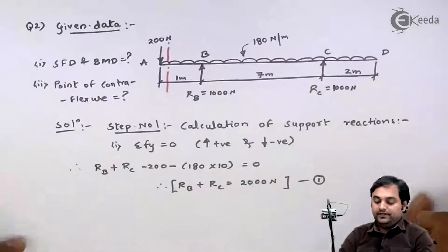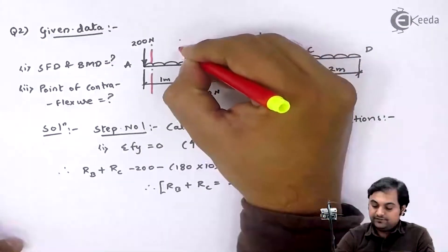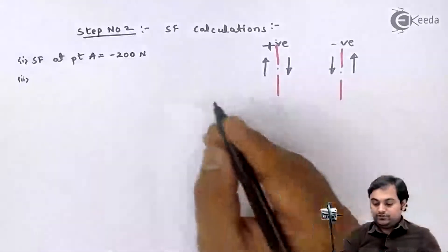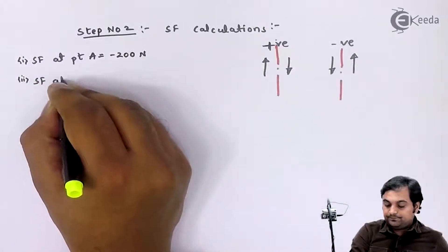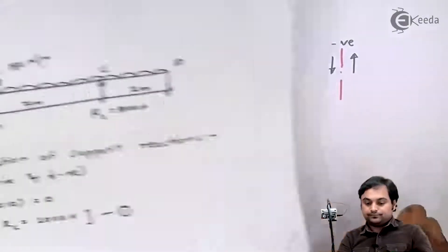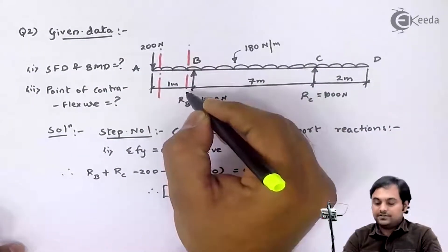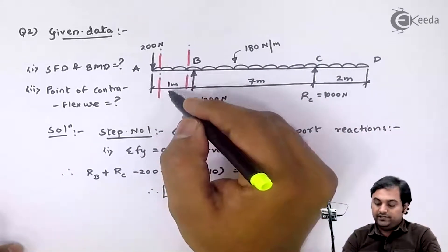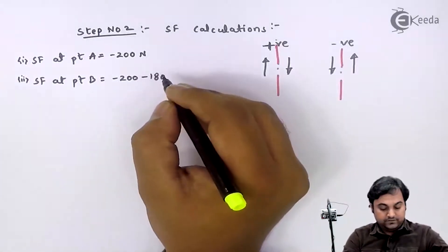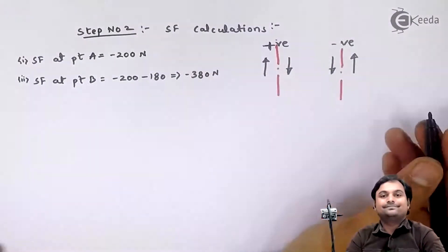Shear force at point A is minus 200 Newton. Next, SF at point B — I will get two values. First, taking the section to the left of B: 200 Newton downward gives minus 200, and the UDL of 180 Newton per meter over 1 meter gives 180 Newton downward, so another negative 180. Therefore SF at B (left) is minus 380 Newton.